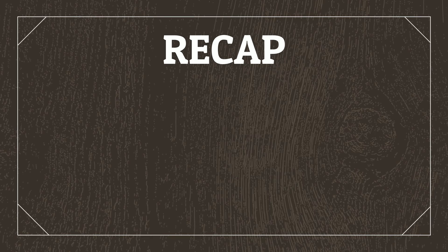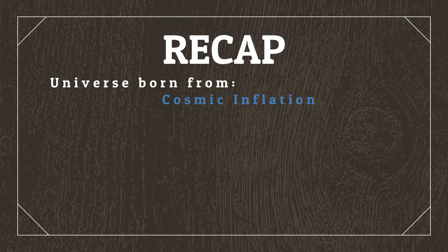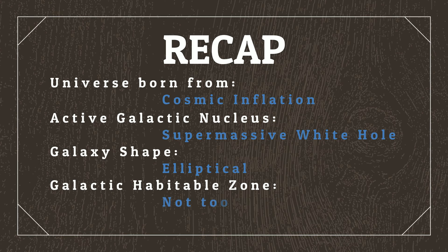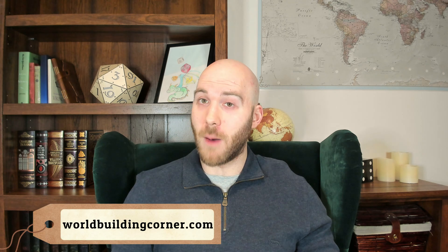To recap: our universe is going to be born from cosmic inflation. We've defined what an active galactic nucleus is and chosen a supermassive white hole to be the centre of the galaxy we're worldbuilding together, which we've established is an elliptical galaxy. Finally, we looked at the galactic habitable zone, making sure that any life we worldbuild isn't going to be set up to fail before it even starts. Join me next time, where we'll make the actual planet that we'll be using for all of our worldbuilding moving forward. You can find all the information in this video and other resources for worldbuilding in general over at worldbuildingcorner.com. If you enjoyed this video, don't forget to like and subscribe to follow the worldbuilding journey. Until next time, stay awesome.